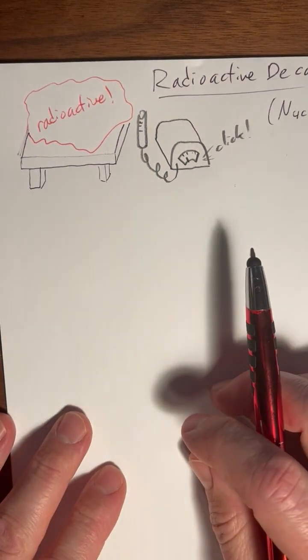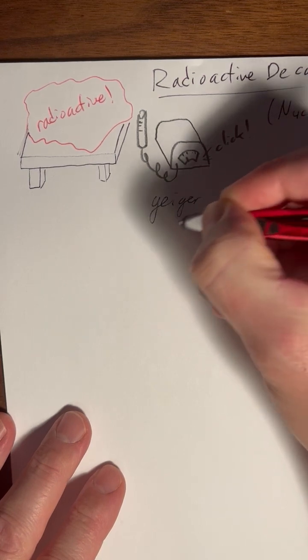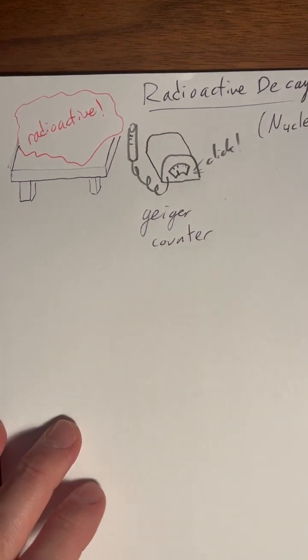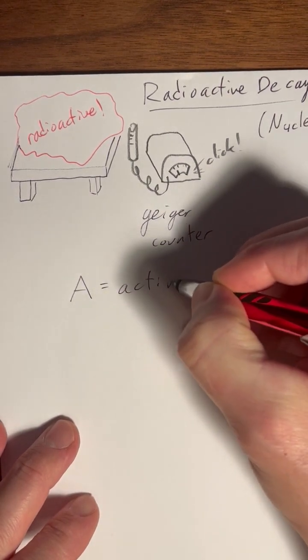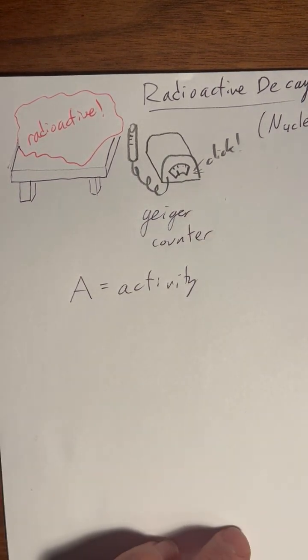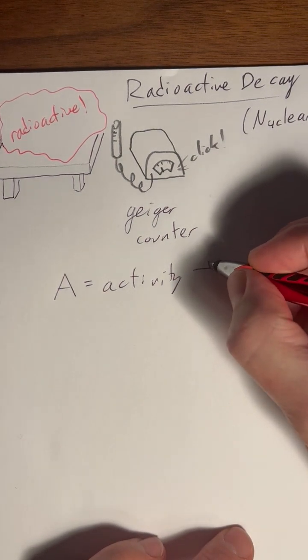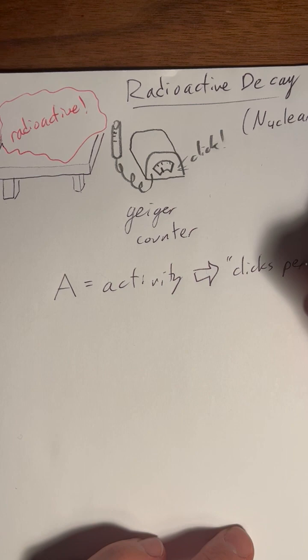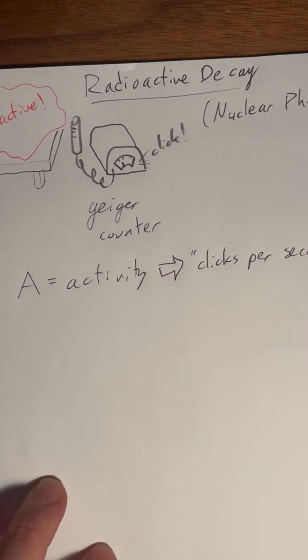Okay, so let's say we got a big rock and we put it on a table and we have a Geiger counter and this counts decays and so we get this click, click, click and our clicks per second is our activity.